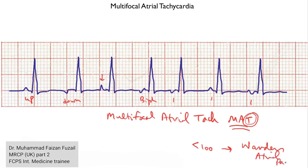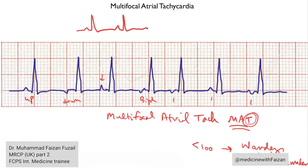Wandering atrial pacemaker simply means that the p-wave is not coming from the same spot all the time — it's not originating from the sinus node; it's kind of moving around. We're not talking about p-waves that just vary slightly or get a little flat sometimes, because the sinus nodal complex is a large area. Even during sinus arrhythmia you can see minor changes in p-wave morphology. But here you clearly see some p-waves that are completely upside down, some are biphasic, and some are taller than others — this is an example of what multifocal atrial tachycardia looks like.